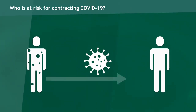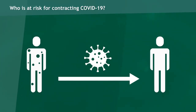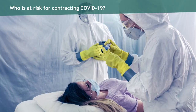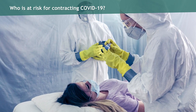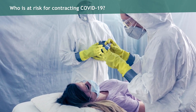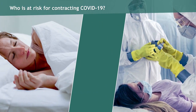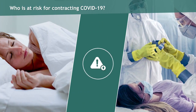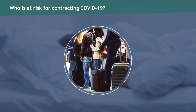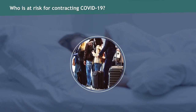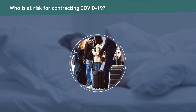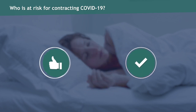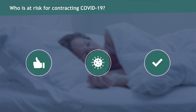The risk of infection is dependent on a person's exposure. Healthcare workers caring for infected patients and family members in close contact with a patient are at higher risk for infection. Others who may have been in close contact with an infected person are also at risk. At this time, the most accurate and reliable sources of information about COVID-19 are from the CDC and WHO.